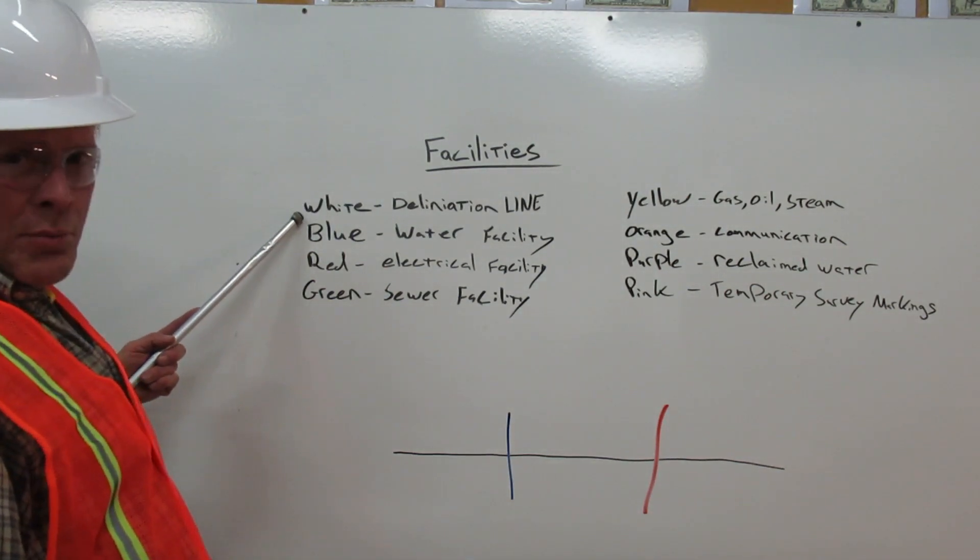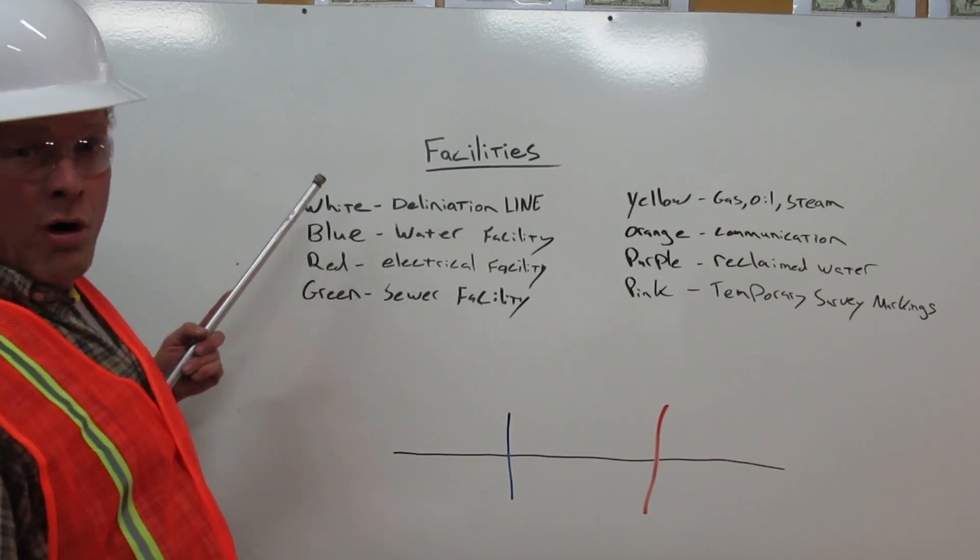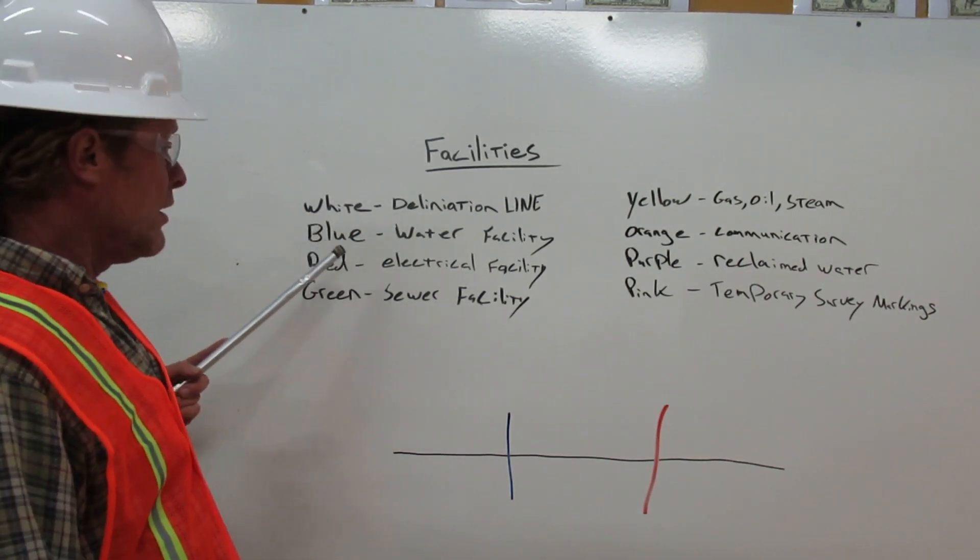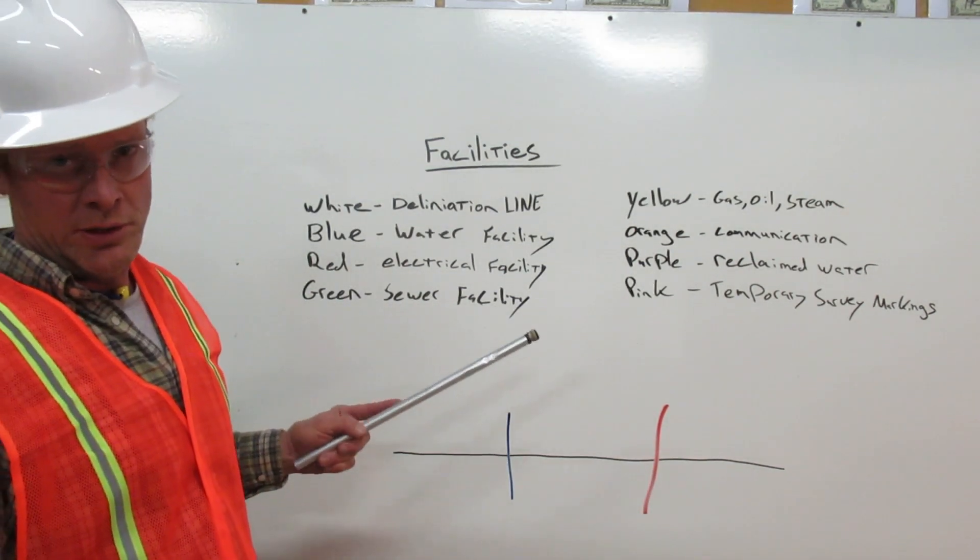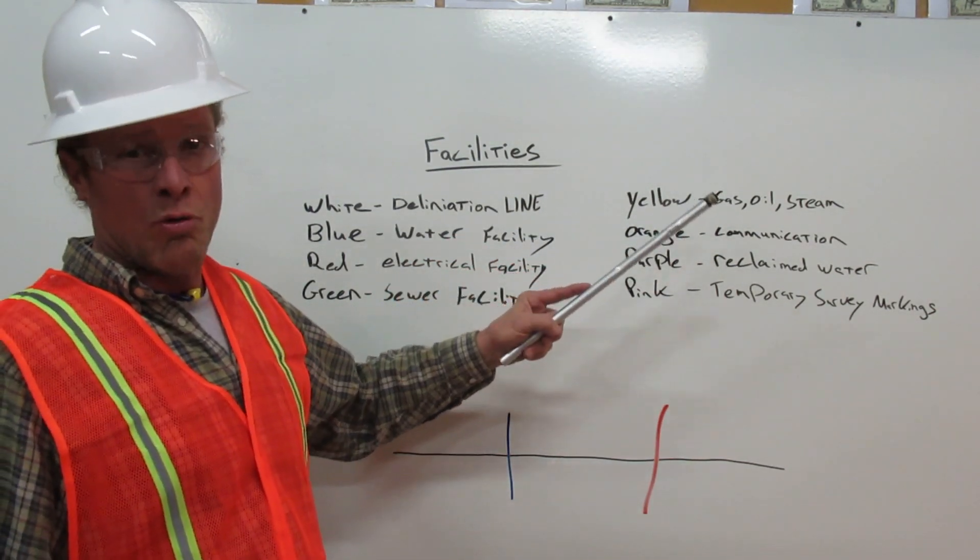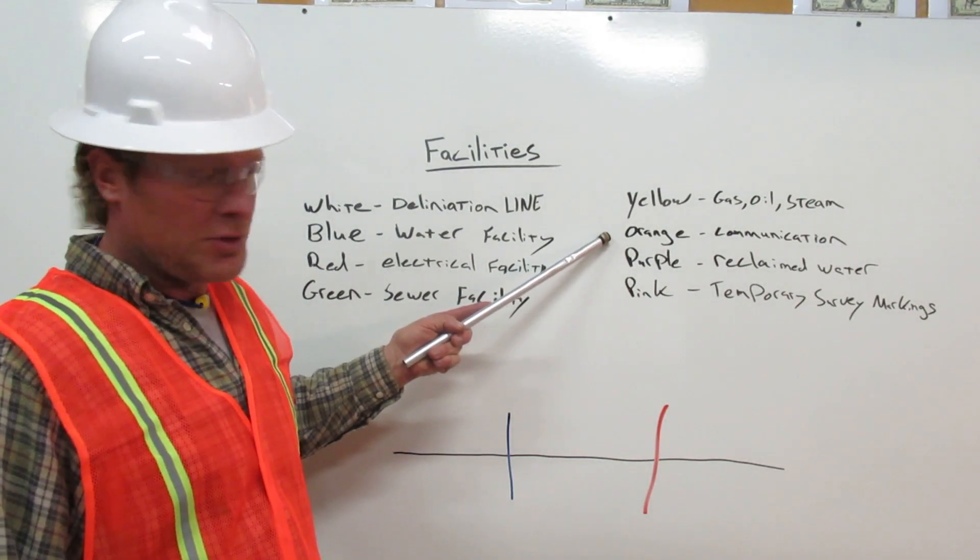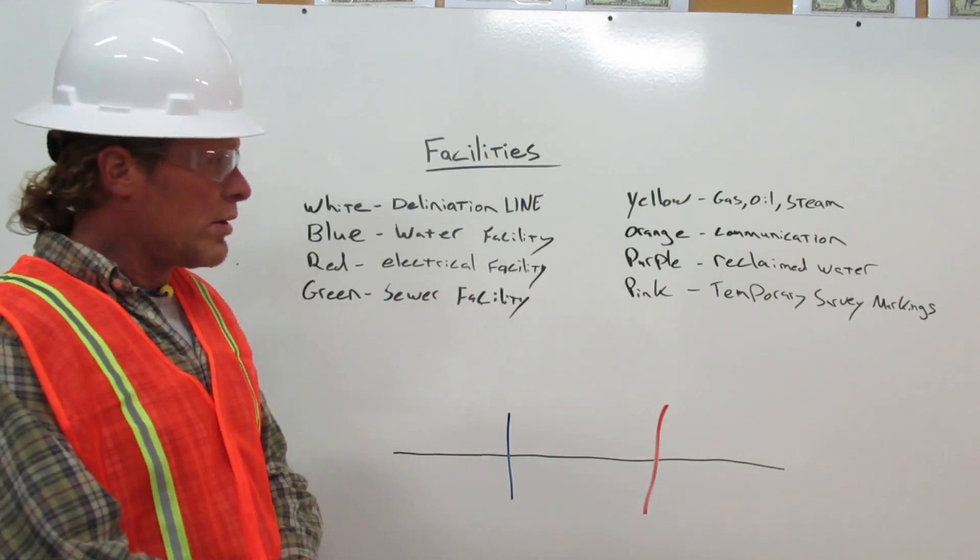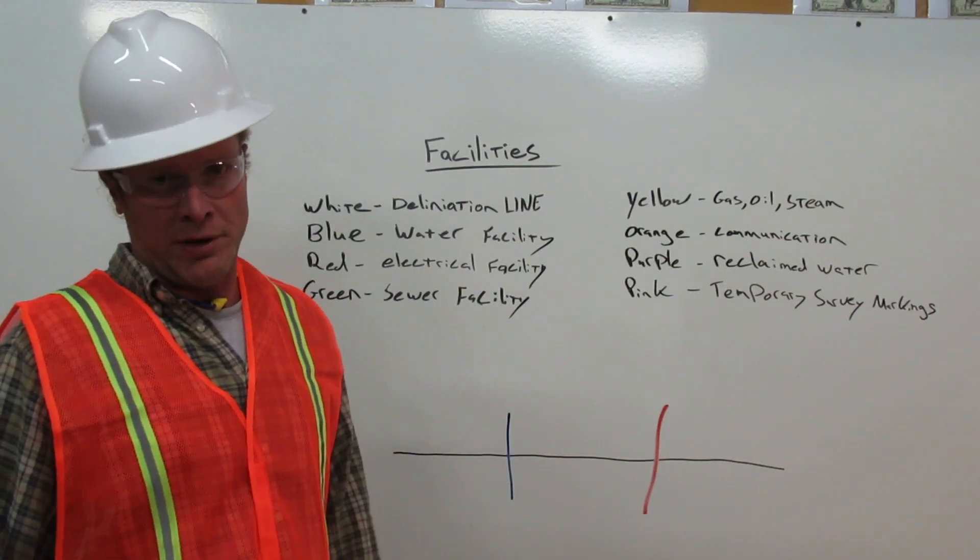White represents the delineation line. Blue represents a water facility. Red represents an electrical facility. Green represents a sewer facility. Yellow represents gas, oil, or steam facilities. Orange represents communication facilities. Purple represents reclaimed water facilities. And pink represents temporary survey markings.